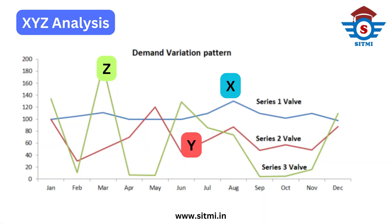If we plot XYZ analysis in a line graph, consider three products: Series 1, Series 2, and Series 3. Series 1 is basically the X category of material, whose demand is stable throughout the year. Series 2 is the Y category, whose demand has a little more variation compared to X class. Series 3 has sporadic demand variation compared to X and Y, and that's why it is part of Z class material.